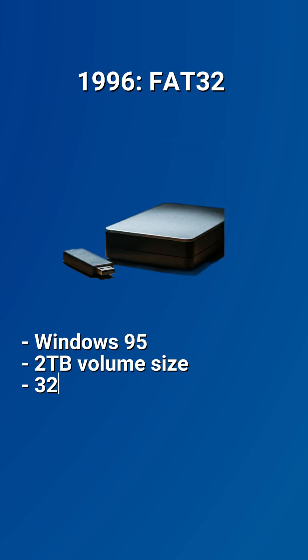Then came FAT32 with Windows 95, vastly increasing storage capacities to support volumes up to 2 terabytes. This made it ideal for external drives and larger storage devices, maintaining its place as a preferred file system due to its versatility and efficiency.